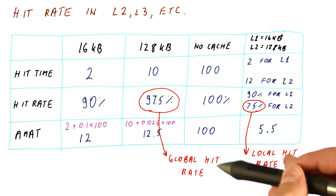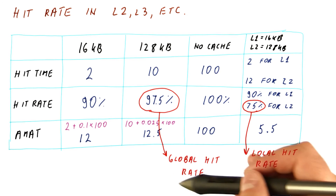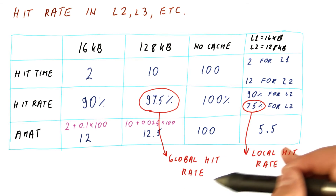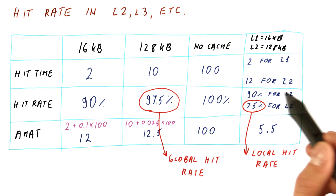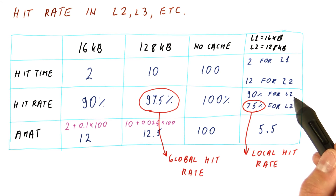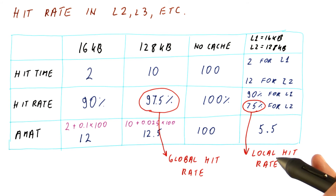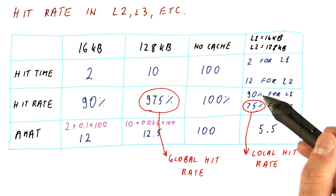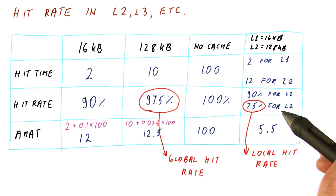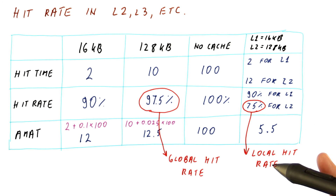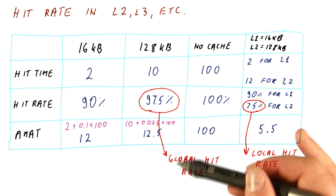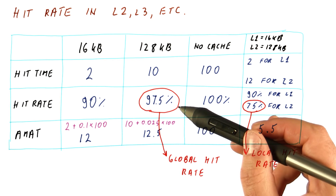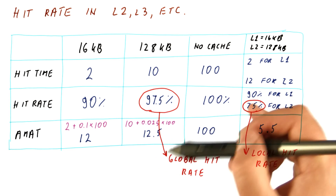When we talk about cache size and how bigger caches behave better as far as hit rate is concerned, we usually think about the global hit rate, because the local hit rate heavily depends on what you have as the level 1 cache. If it's a level 3 cache, its local hit rate would depend on the level 1 hit rate and the level 2 hit rate before we even access the level 3 cache. Its global hit rate is going to be similar to the hit rate of that type of cache if it were used alone.